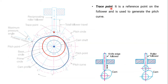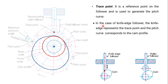Let's get back to the trace point. The trace point is the reference point on the follower, and it is used to generate the pitch curve. In the case of a knife-edge follower, the knife edge represents the trace point — this point will represent the trace point — and the pitch curve corresponds to the cam profile. So in the case of a knife-edge follower only, this knife edge will act as the trace point, and the pitch curve will be the same as the cam profile.